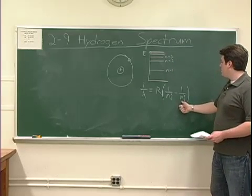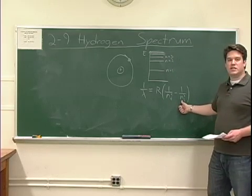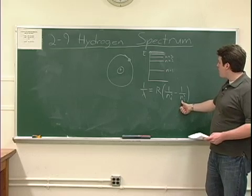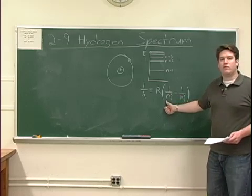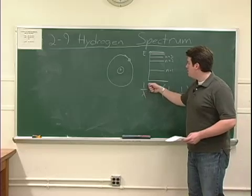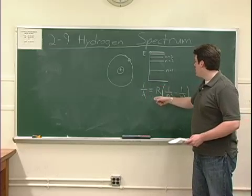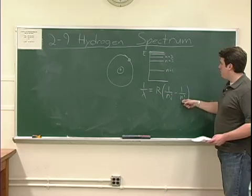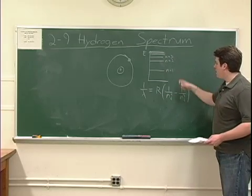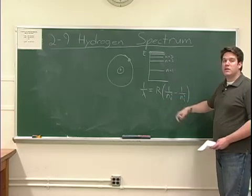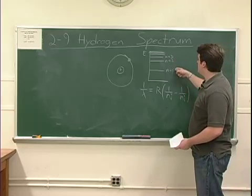If the electron starts out in a state ni and then jumps down to a state nf, it will emit a photon of wavelength 1 over lambda given by this formula, where you can plug in n equals 2 for ni or n equals 1 for nf if the electron is jumping from the second state to the first state.